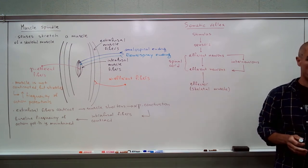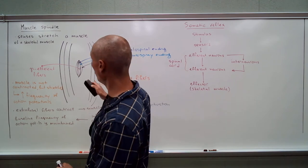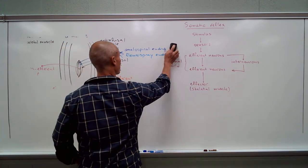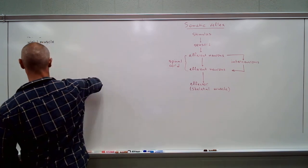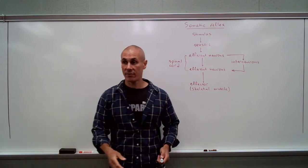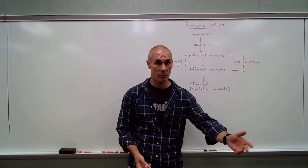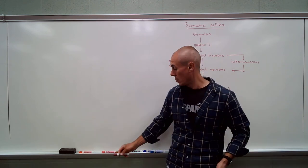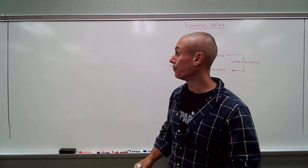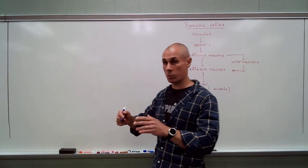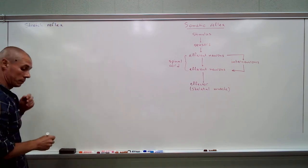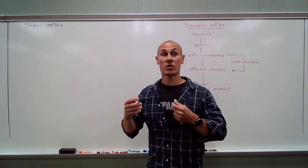You can see that your cortex is not involved in the decision-making — it all happens at the level of the spinal cord. So we're going to discuss the first reflex, which is the stretch reflex, using the knee-jerk reflex as an example. It all starts with the stretch of a muscle.